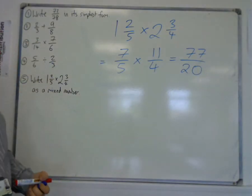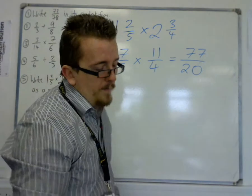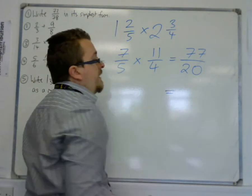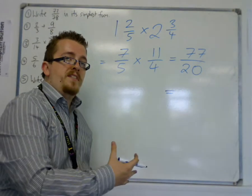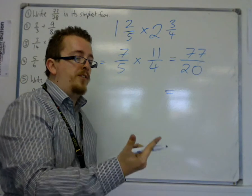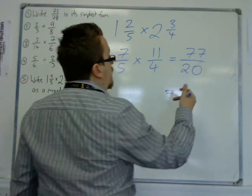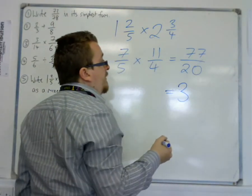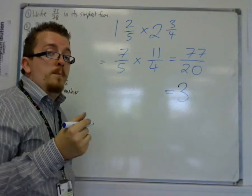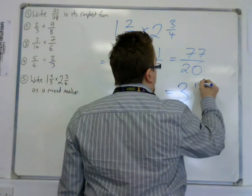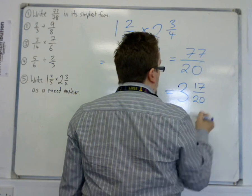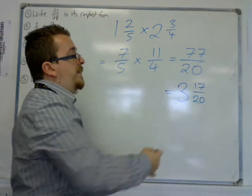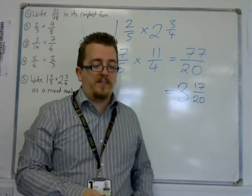And then to write that as a mixed number, we think, how many 20s go into 77? Well, we have 20, 40, 60. So 3 twenties go into 77, with remainder 17. So we can write it as 3 and 17 twentieths. That's the mixed number.